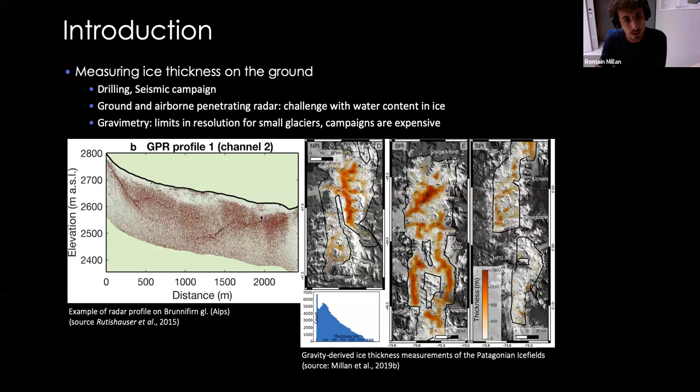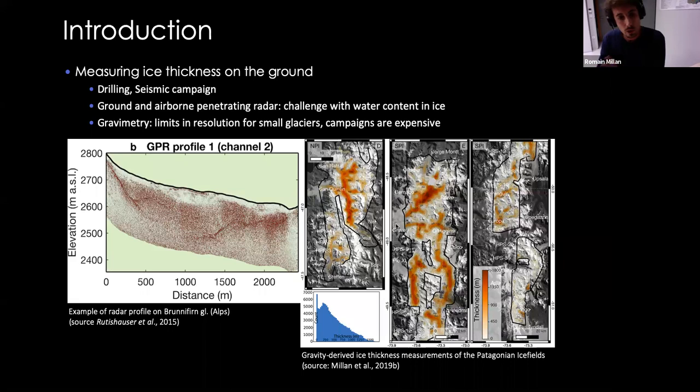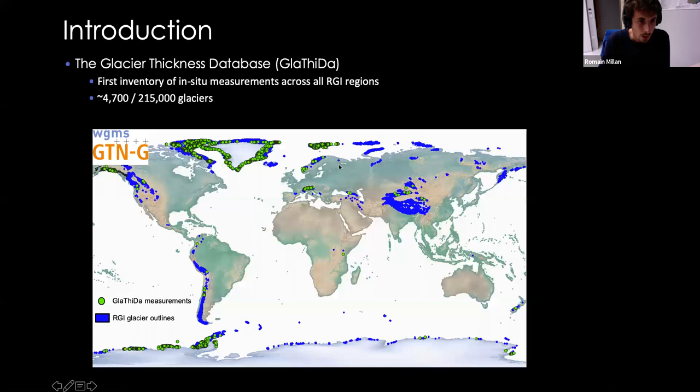Here you have an example of an airborne radar profile on the Grindelwald glacier in the Alps. You can see that where the glacier is thickest, we are not able to map the bedrock. There are also other geophysical techniques that use the inversion of gravimetry. Here is an example of a thickness map obtained from gravimetry inversion in Patagonia — a paper we published in 2019. But there is a limit in resolution with this technique, which impairs our ability to apply it to small glaciers, and campaigns are difficult to apply globally because they are quite costly.